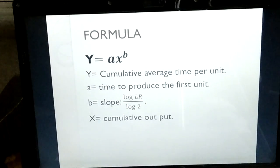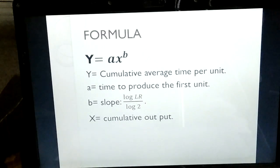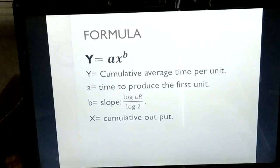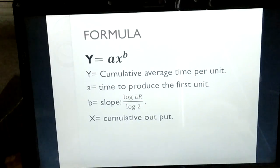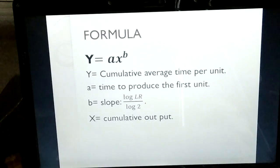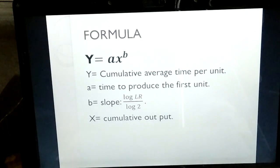Now we are going to look at the algebraic approach. From the word algebraic, you can tell there will be a formula. The formula is y = ax^b. Here, y is the cumulative average time per unit, a is the time to produce the first unit, b is the slope — calculated as log of the learning rate divided by log 2 — and x is the cumulative output.